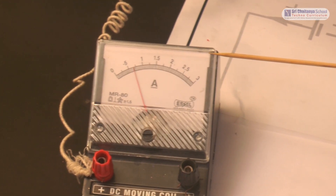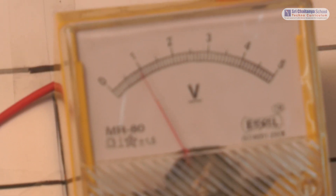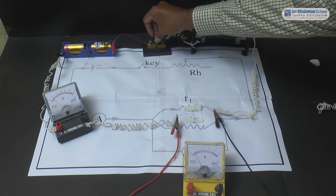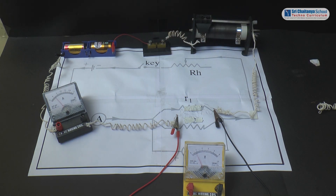When the second resistor is connected: in trial 1, the ammeter reading is 0.6 Ampere, voltmeter reading is 0.9 Volts, and the corresponding resistance is 1.5 Ohm. In trial 2, the ammeter reading is 0.65 Ampere, voltmeter reading is 0.9 Volts, and the corresponding resistance is 1.23 Ohm. Therefore, the mean resistance of the second resistor is 1.36 Ohm.